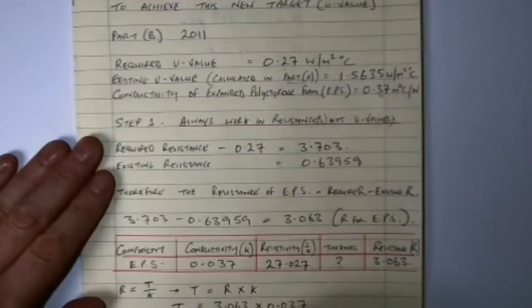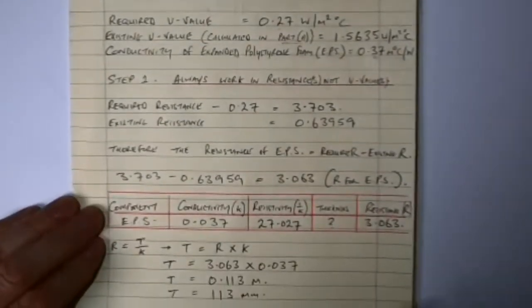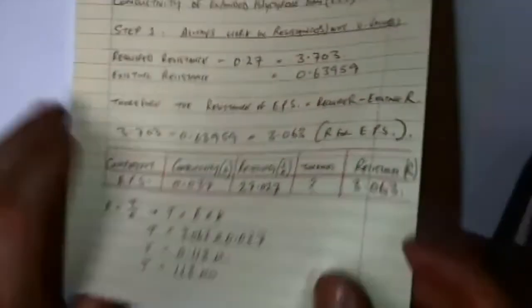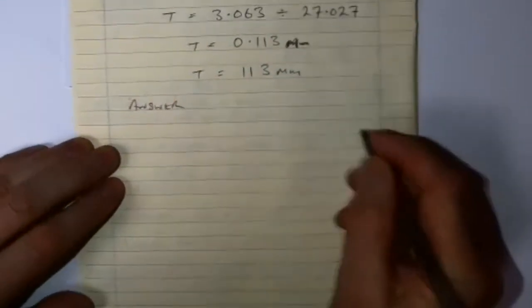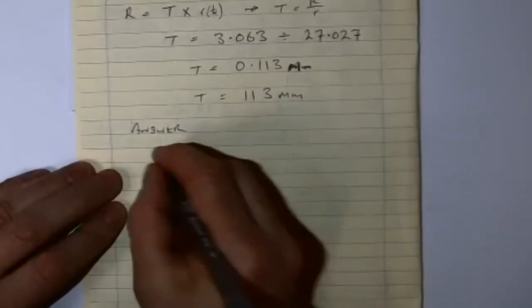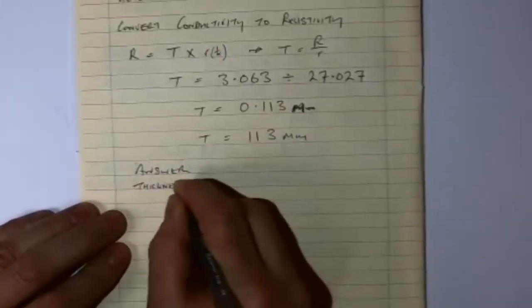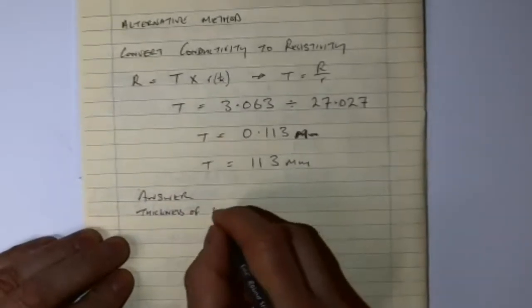So these are just the two methods that we have, and that's pretty much the same every time it comes up. You'll be given a component, and you'll figure out how much insulation is required, and you have to use the information given in part B along with your U-value calculated from part A. And that's how you achieve a new U-value.